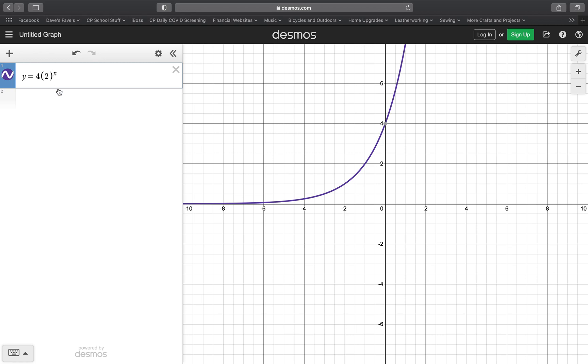If we go to the exponent and put a negative there, what you're going to see is something a little different. You are going to see a reflection over the y-axis. And so essentially what's happening is that we're going from an exponential growth to an exponential decay.